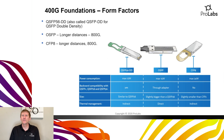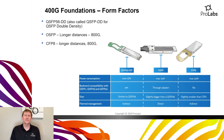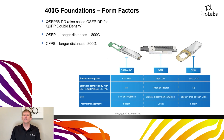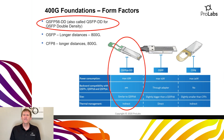Looking at 400Gig form factors, three really bubbled to the top. Switches were developed around CFP-8, OSFP, and QSFP-56DD. The real differences are in power, heat, and thermal management. QSFP-56DD uses a little less power and has indirect thermal management, which is more advantageous for switch providers because they can utilize the same thermal management components used for QSFP-28 100Gig technology.